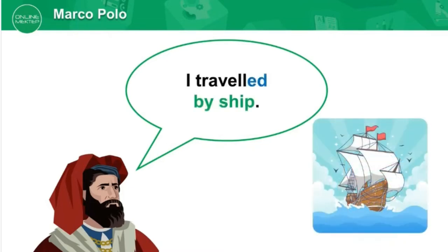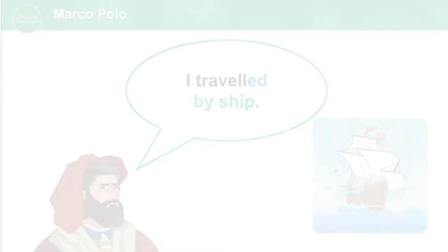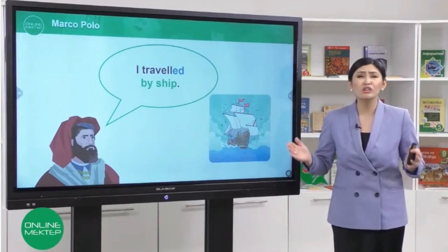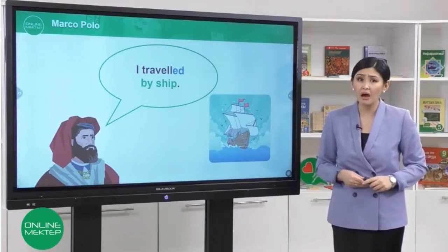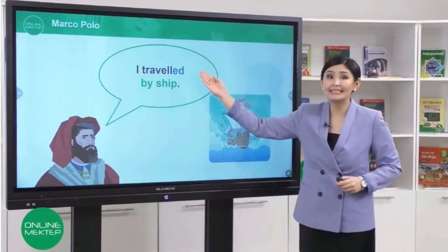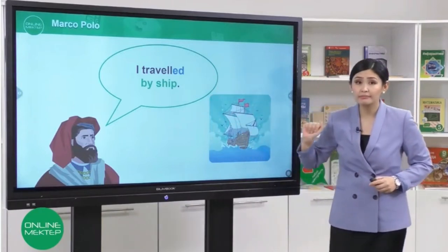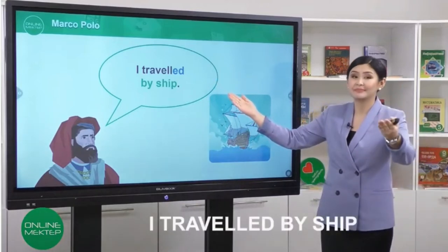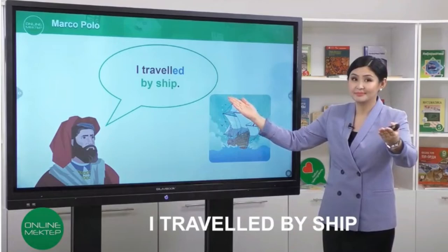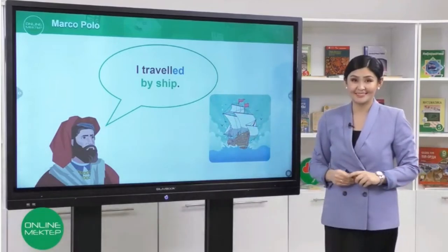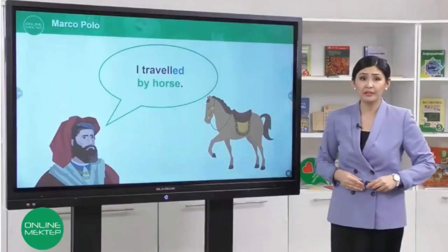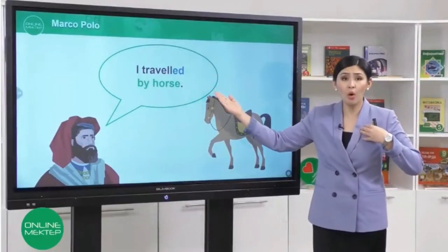When I was young, I travelled by ship. Remember, to talk about an event that was a long, long time ago in the past, add ED to the verb. Now, can you say: I travelled by ship. I also travelled by horse. Repeat! I travelled by horse.